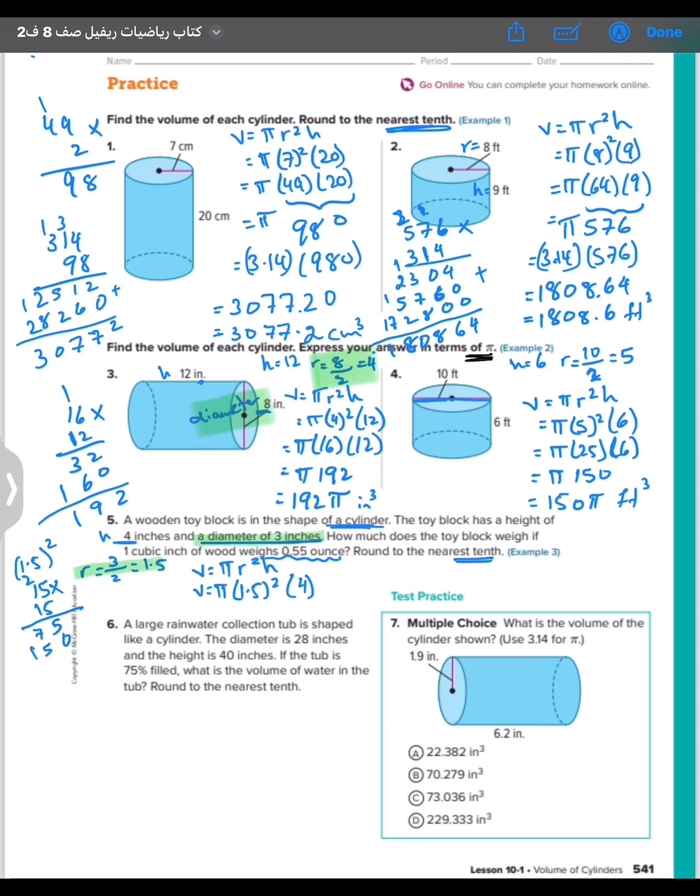So v equals pi times 225. Put it 0 after 2 digits, because here 1 and here 1, so like that: 2.25. 2.25 times 4 equals pi. Volume, sorry, 9 pi.